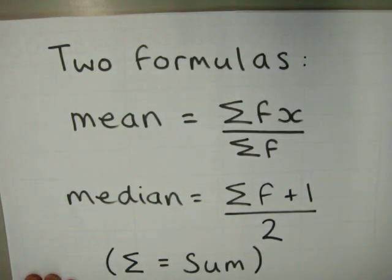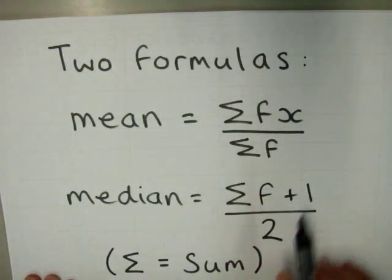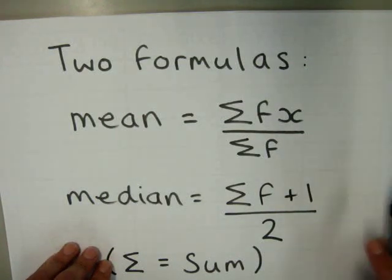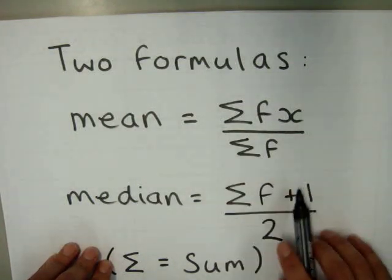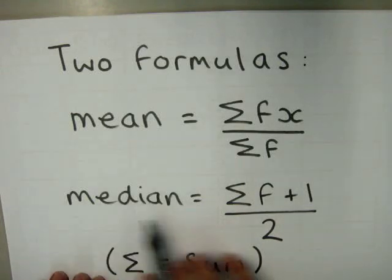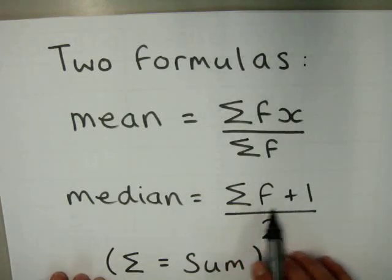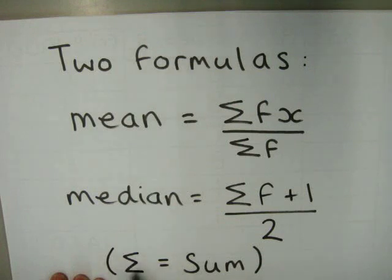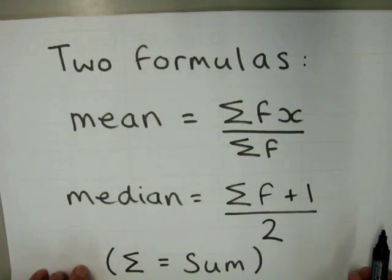Two things you'll need to remember: to find the mean, it is the sum of your frequencies times your x value — that's the original data — divided by the sum of your frequencies. And to find the median, it's the sum of the frequencies plus one, divided by two; this will give you the middle value from your data. Remember, this sigma sign means a sum — it means you add everything up.